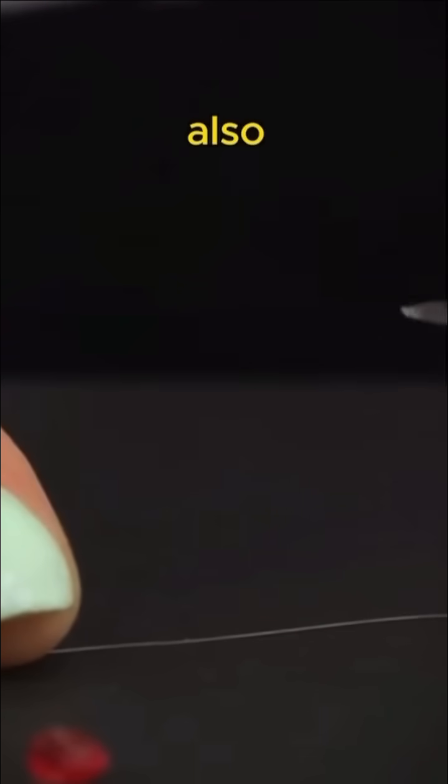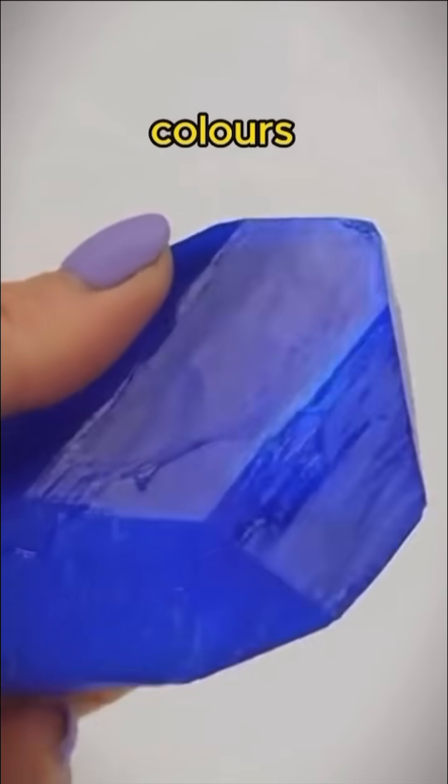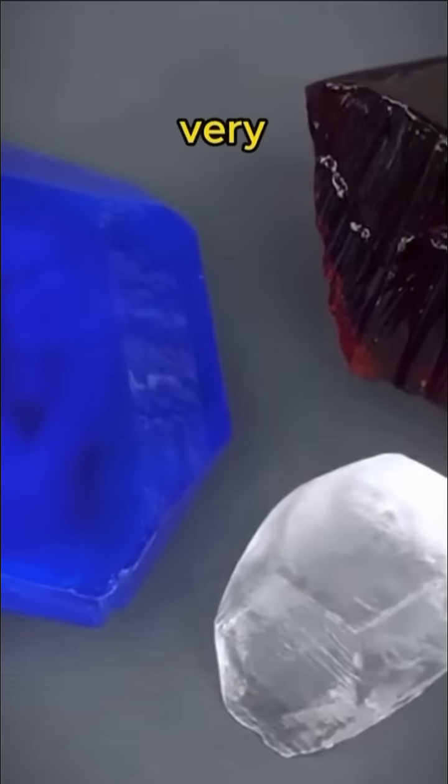We can also use materials such as copper iodide or sulfate to make crystals of different colors. Looking at the brilliant gems you've made, isn't it very satisfying?